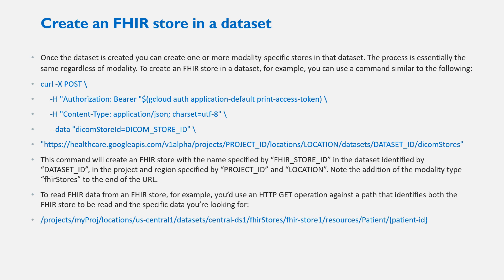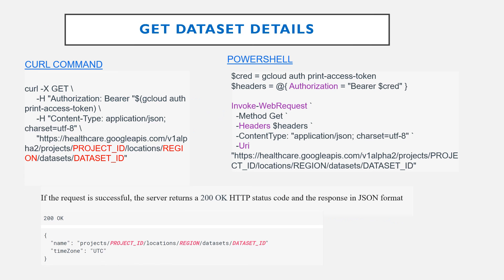Now let's talk about how to create a FHIR store in a dataset. Once the dataset is created, you can create one or more modality-specific stores in the dataset. The process is essentially the same regardless of modality. To create a FHIR store in a dataset, you can use a command similar to the one shown on the slide. This command will create a FHIR store with the name specified by the FHIR store ID, in the dataset identified by dataset ID, in the project and region specified by project ID and location. To read FHIR data from a FHIR store, you use an HTTP GET operation against a path that identifies both the FHIR store to be read and the specific data you are looking for. On the slide, you can see GET dataset details using curl and PowerShell commands.